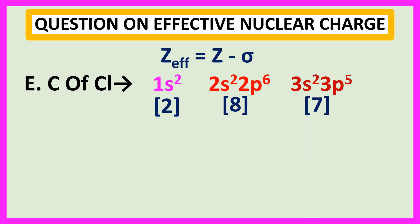Now, we calculate the value of sigma for the last electron of chlorine atom. Sigma is equal to 0.35 times 6 for the remaining 6 electrons in the third shell, plus 0.85 times 8 for the 8 electrons in the second shell, plus 1.0 times 2 for the 2 electrons in the first shell.